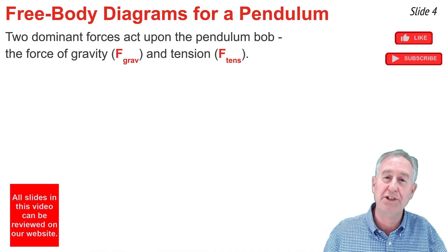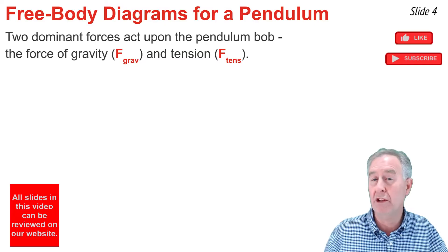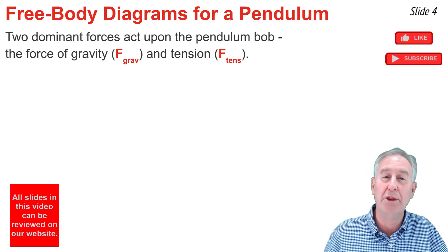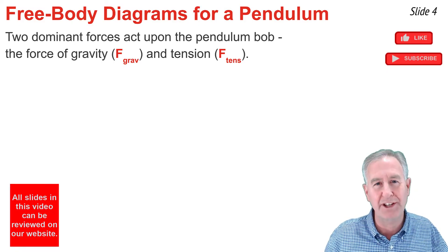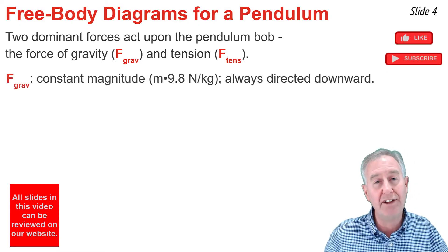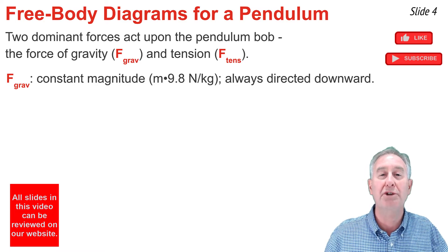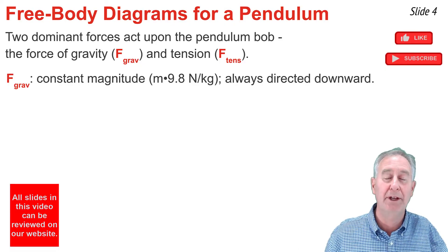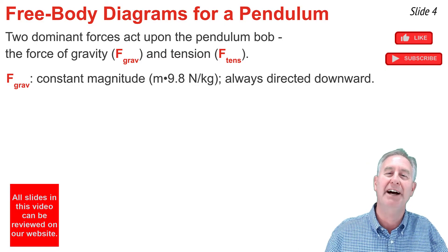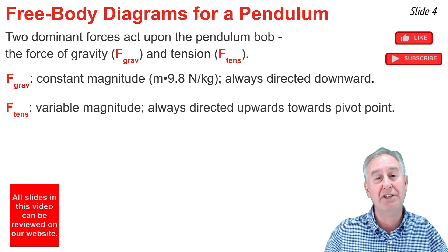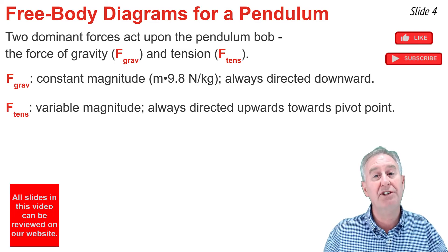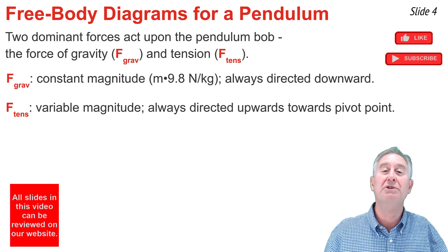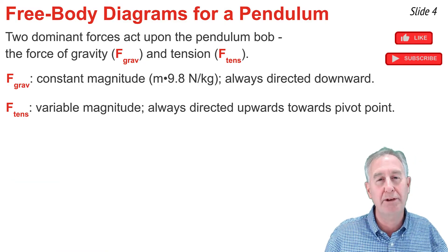As a pendulum bob vibrates back and forth along its circular arc, there are two dominant forces that act upon it. First, the force of gravity, which we'll label as F-grav. And second, the tension force that comes from the string interacting with the pendulum bob — we'll label that force F-tension. The force of gravity has a constant magnitude and a constant direction. Its magnitude is found by multiplying the mass of the bob by 9.8 newtons per kilogram, and its direction is always downward. The tension force has a changing magnitude and a changing direction, but the rule is that it's always directed upwards along the string towards the pivot point.